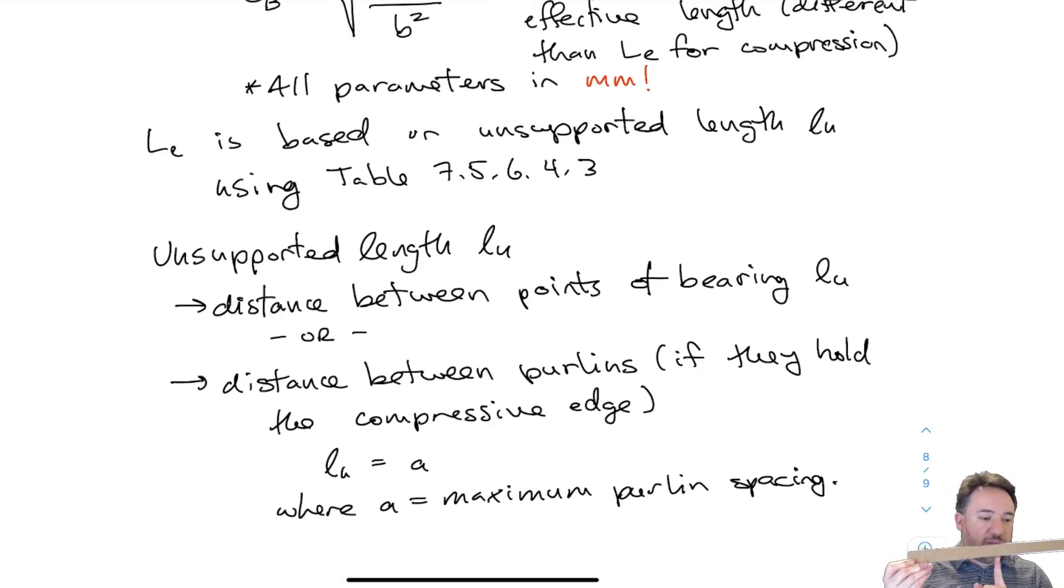then we can't consider purlin spacing anymore because the purlins would be restraining the tension side. We'd have to consider the full length of the section in negative moment. You can draw a moment diagram with three supports to convince yourself this makes sense.